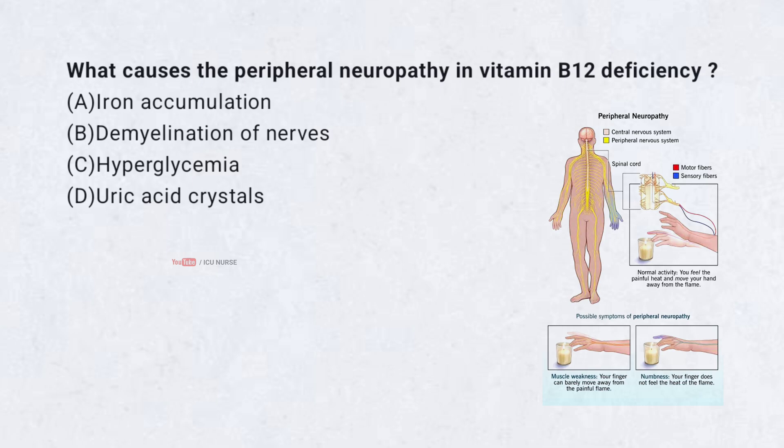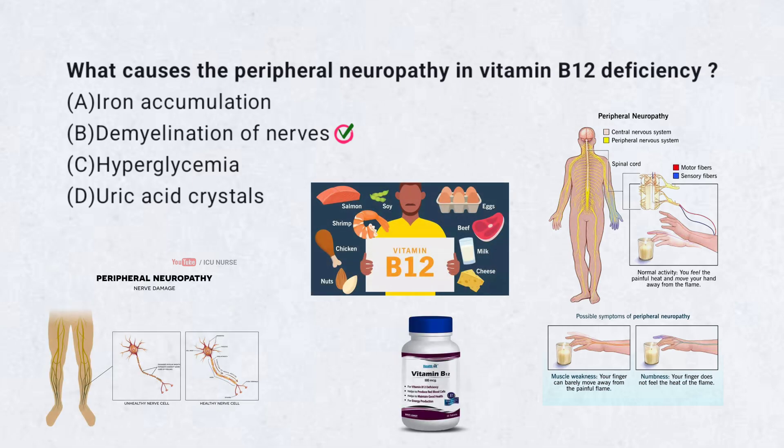What causes the peripheral neuropathy in vitamin B12 deficiency? A. Iron accumulation, B. Demyelination of nerves, C. Hyperglycemia, D. Uric acid crystals. Correct answer: B. Demyelination of nerves. B12 is essential for myelin synthesis; its deficiency damages nerve sheaths, causing neuropathy.